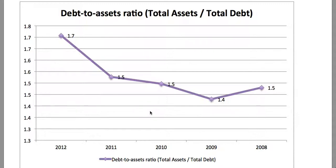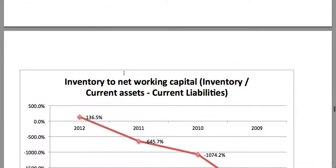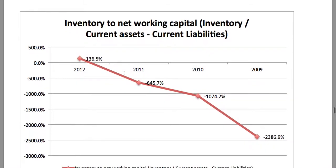Considering the debt to assets ratio — total assets to total debt — we see it was 1.5 in 2008 and 1.7 now, with the company adding to assets. Looking at inventory to net working capital, this measure was very negative in 2009 but has since improved to positive territory at 136.5 percent in 2012.